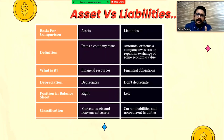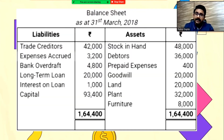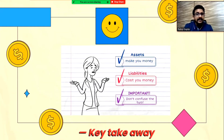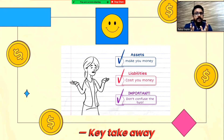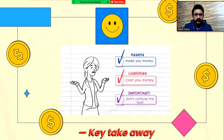In summary: an asset basically makes you money, whereas a liability costs you money. We should not confuse between these two items — asset versus liability. Hope this is clear to you. Thank you.